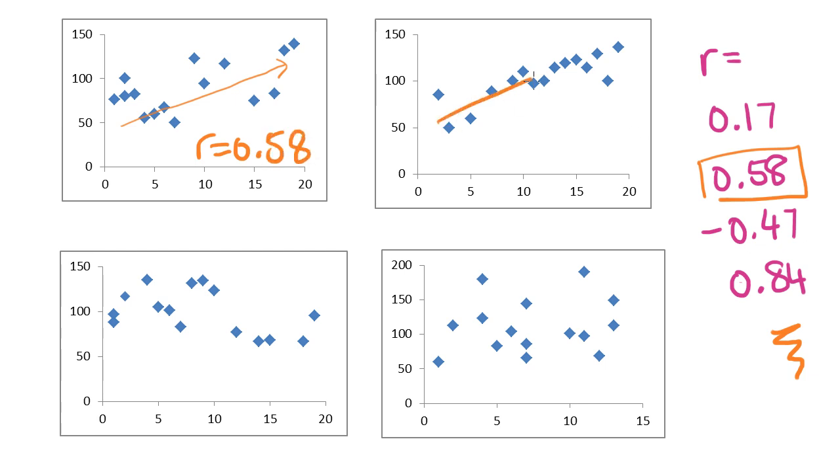This one here, also quite positive. But would you look at that? They really fall closely to that line. So they're conforming quite well to that relationship, that linear relationship, which means it's quite strong and it's positive. So that one's going to be r equals 0.84.